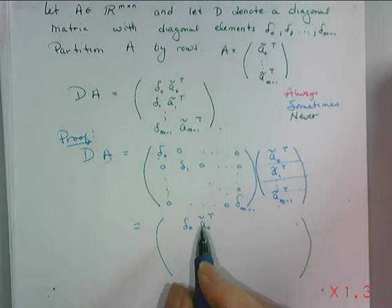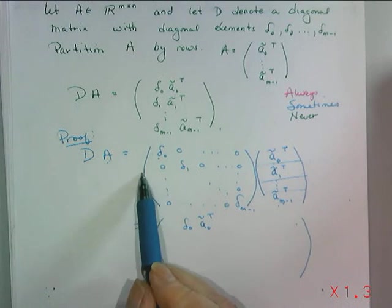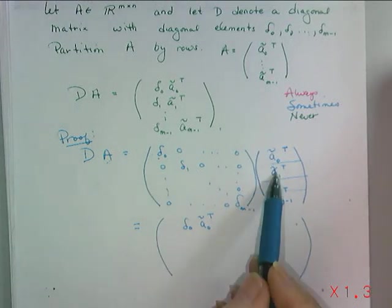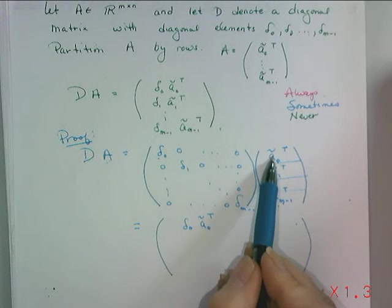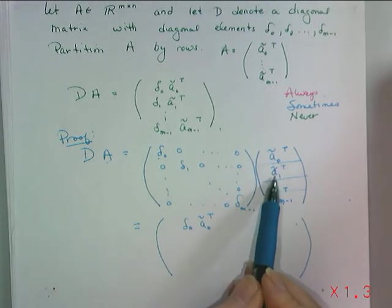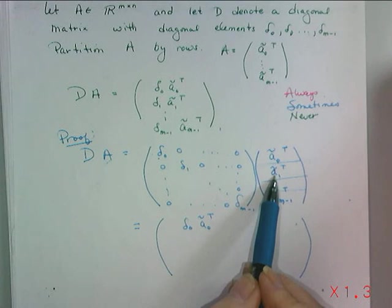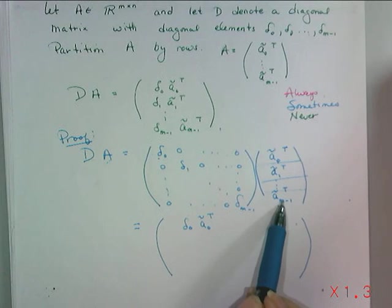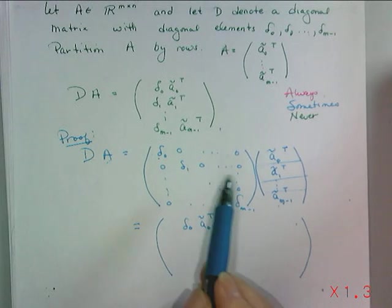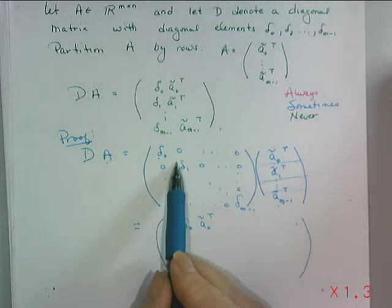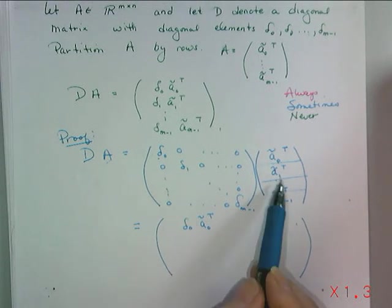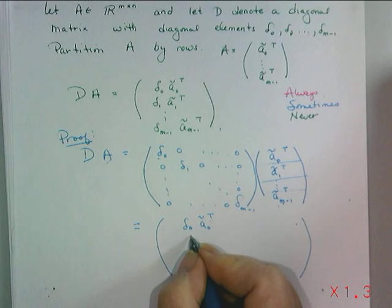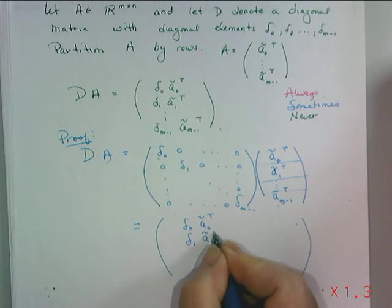For the second row of the product, we'll take the second row of D and multiply it by all the rows. We'll have zero times this row plus delta one times the second row plus zero times the third row and so forth plus zero times the last row. The only term in the sum that's non-zero is the delta one times A one twiddle transpose.